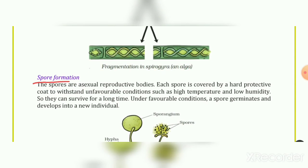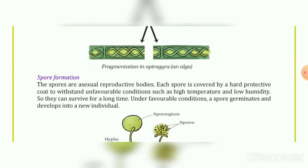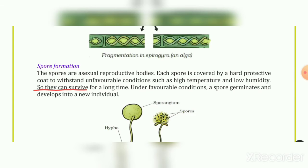The fourth method is spore formation. Spores are asexual reproductive bodies. Each spore is covered by a hard protective coat to withstand unfavorable conditions such as high temperature and low humidity. So they can survive for a long time. Under favorable conditions, a spore germinates and develops into a new individual.